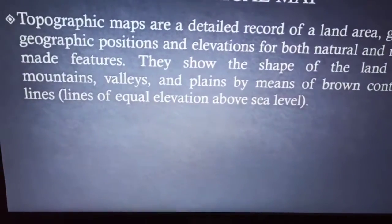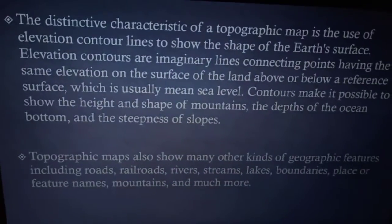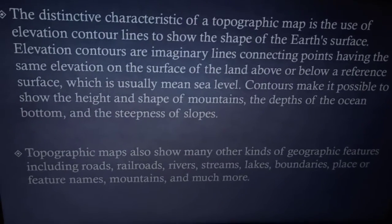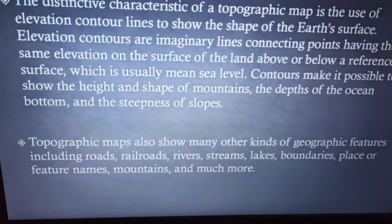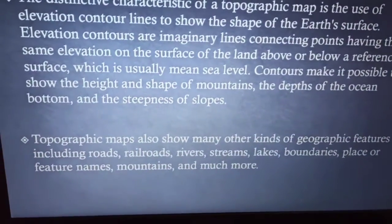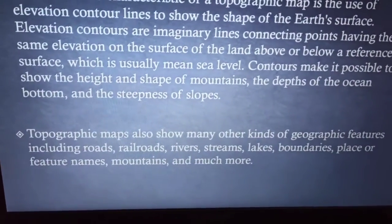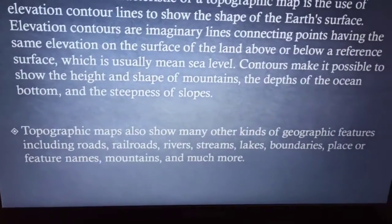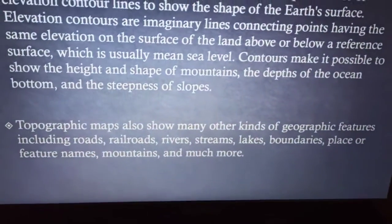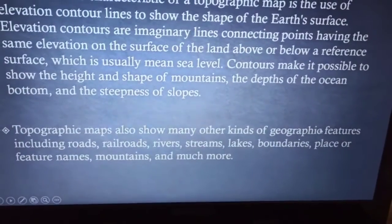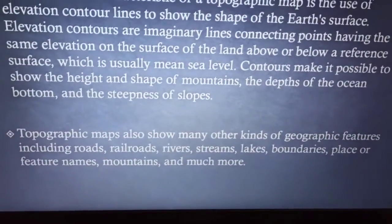With the help of contour lines, we can identify what type of feature is present in a particular region. A distinctive characteristic of topographical maps is the use of elevation contours — imaginary lines connecting points of the same elevation on the earth's surface above or below the mean sea level. Contours make it possible to show the height and shape of mountains, the depth of the ocean bottom, and the steepness of slopes. Topographical maps also show roads, railways, rivers, streams, lakes, boundaries, and other geographical features.